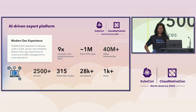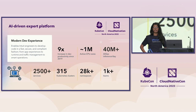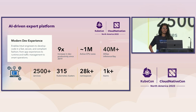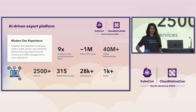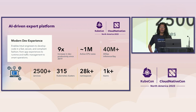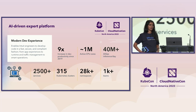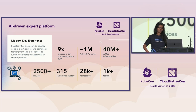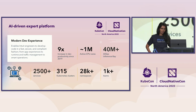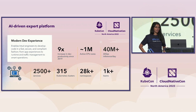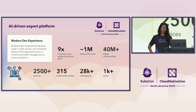Intuit is a fintech company built on an AI-driven expert platform. To give you an idea of the scale at which we run our clusters: we run about 315-plus and growing Kubernetes clusters comprising 28,000 namespaces that serve about 2,500 production services. We have a whole bunch of pre-prod services as well, serving a development community of 7,000 engineers comprising about 1,000 development teams. We do about 40 million AIOps inferences per day to help our customers with their financial needs.